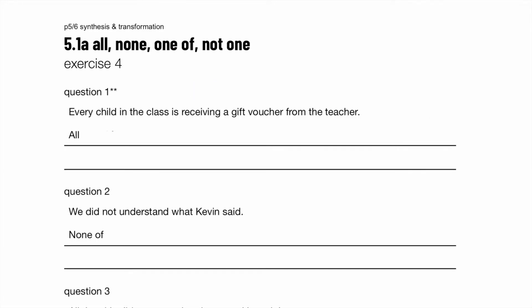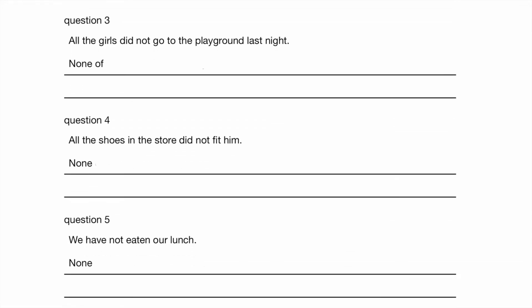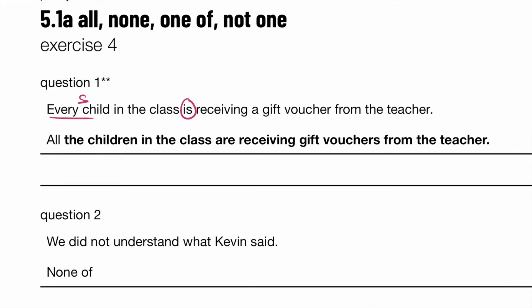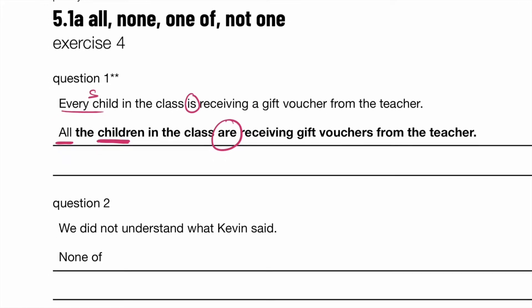Exercise 4, first question, level 2: Every child — that is singular, therefore present tense and singular 'is' — receiving a gift voucher from the teacher. So we can't say 'all the child.' We have to say all the children in the class. Make sure when using 'all' for a countable noun you use the plural form 'are.' Don't use 'were' — we're not using the past tense here. So: all the children in the class are receiving gift vouchers from the teacher.